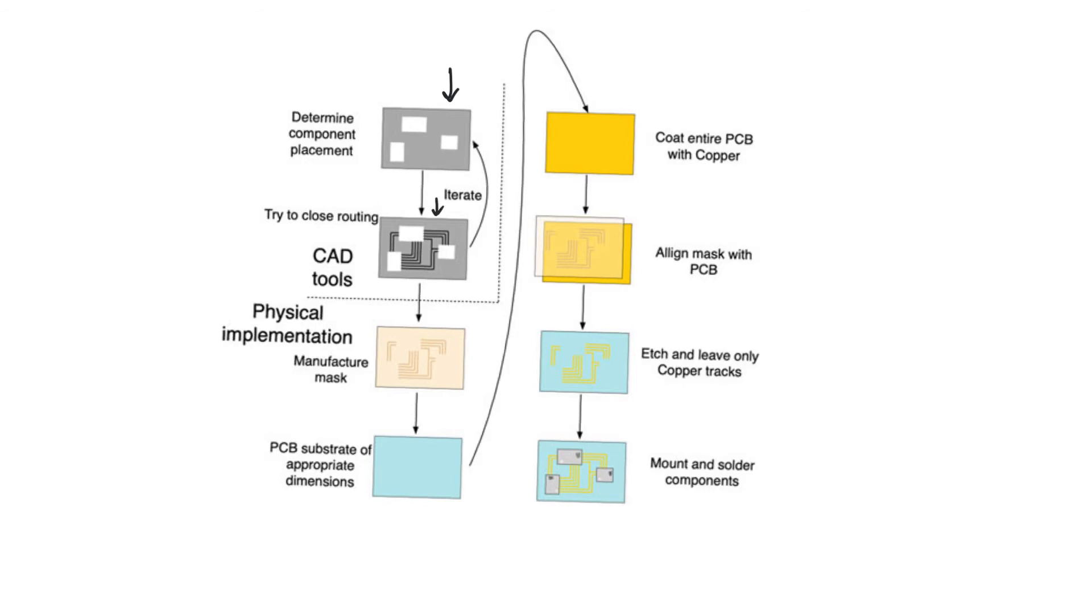You can find a solution, or you may fail to find a solution, in which case you need to reiterate. This is where we said that there's a huge analogy between what's happening and placement and routing. Once you have finished, and of course, you will use CAD tools to aid you in this, you then proceed to fabrication.